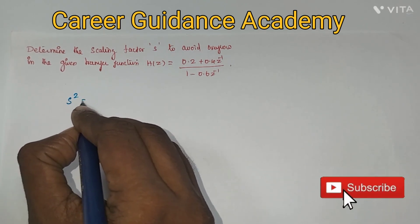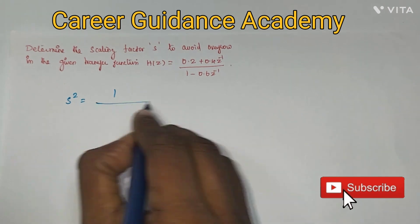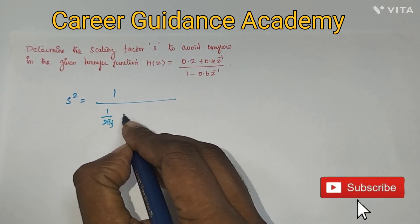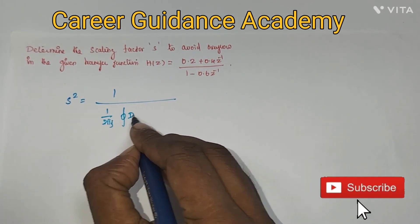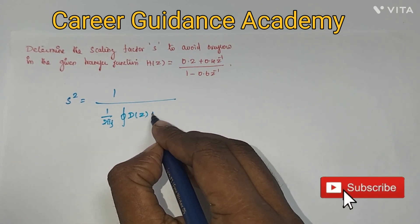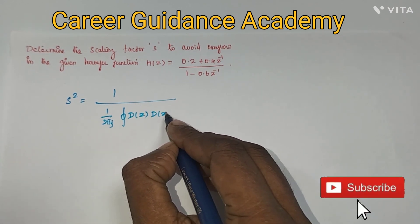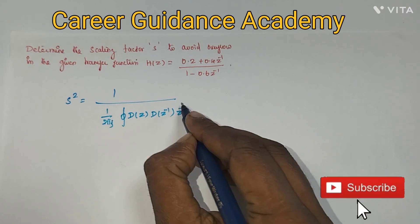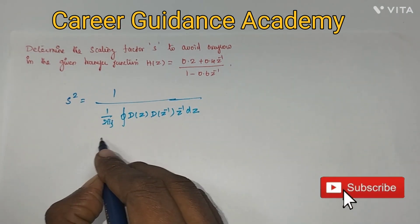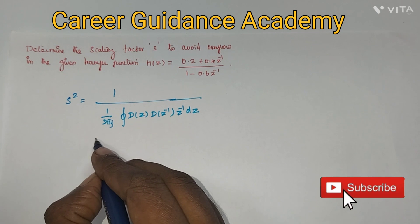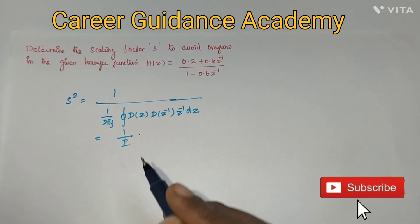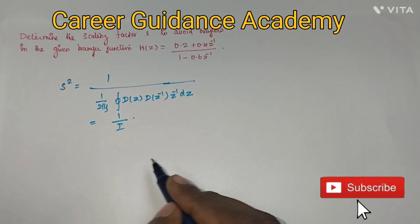The formula to find the scaling factor is: S² = 1 divided by (1/2πj) times the contour integral of D(z) — that is the denominator polynomial — multiplied by the inverse of the denominator polynomial, then into dz. I'm going to represent this contour integral as a small variable 'I' for simplification.